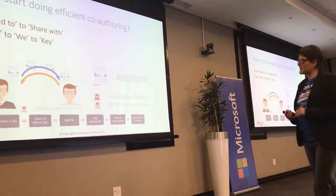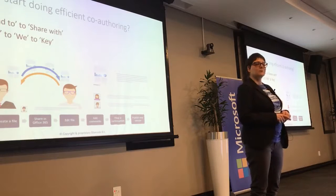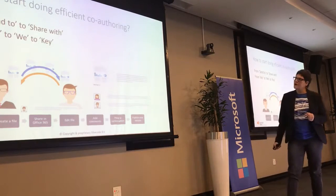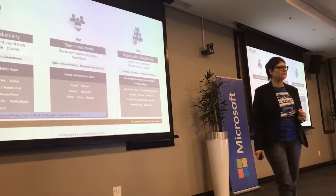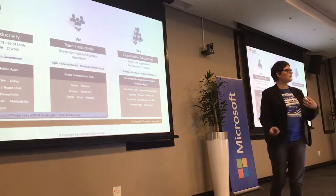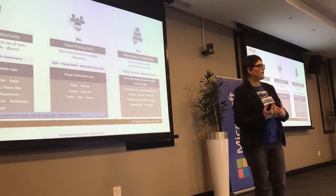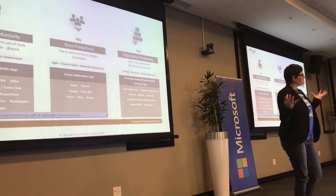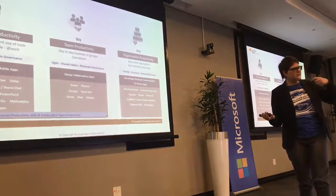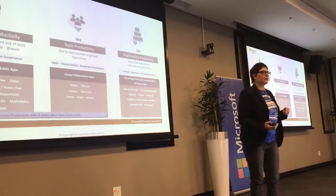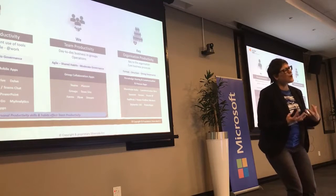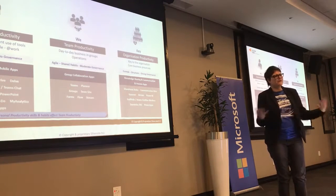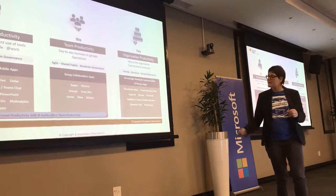I'd like to introduce something we use in organizations called 'Me, We, and Key.' It's a model to make it easier for employees to understand what tool to use when. We use three areas: if it's about my personal productivity, I've got my Office apps and my OneDrive — that's my file space. Using OneNote for digital note-taking rather than paper is a productivity gain, but if I choose to take personal notes on paper, the effect on the organization isn't huge. That changes when we are a group.